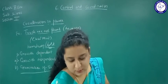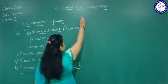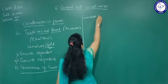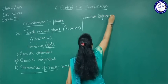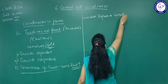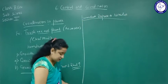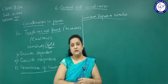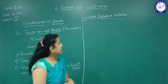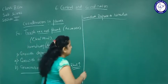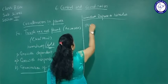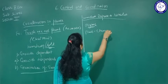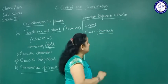Taking the example of Mimosa pudica, the touch-me-not plant shows immediate response to stimulus. Just as in reflex action, within a fraction of seconds our nervous system — brain, spinal cord, and neurons — responds. In plants too, there is an immediate response to stimulus even though they don't have specialized organs for it. Plants have chemical responses and hormones such as auxins, gibberellins, and cytokinins that help them respond.